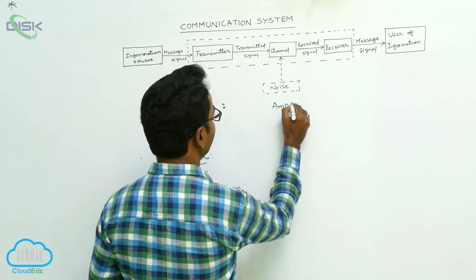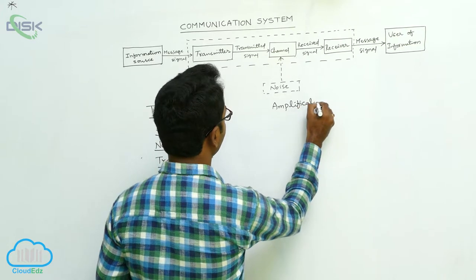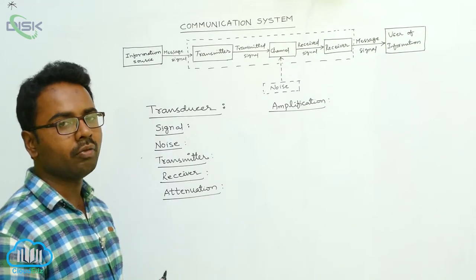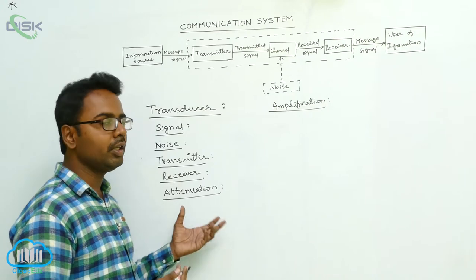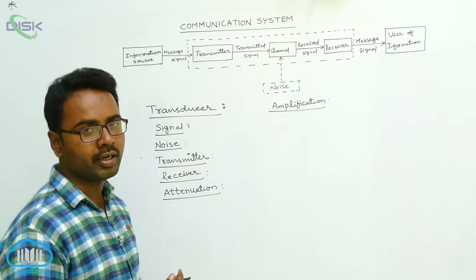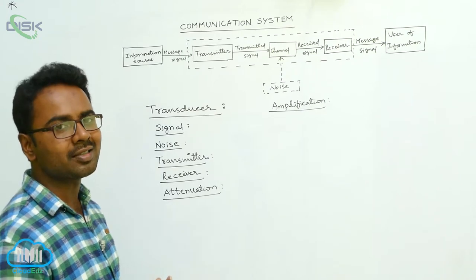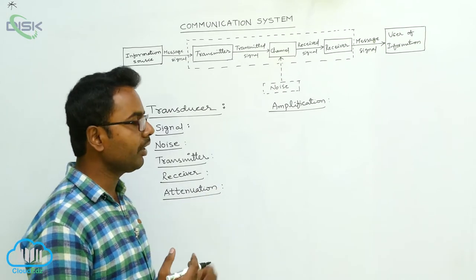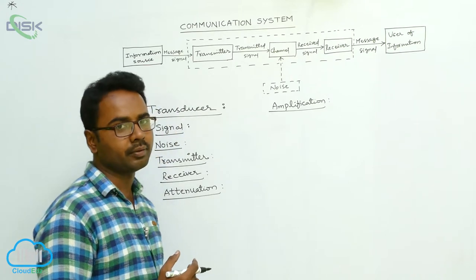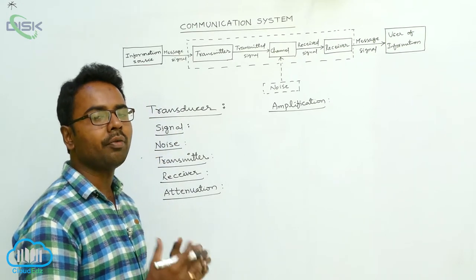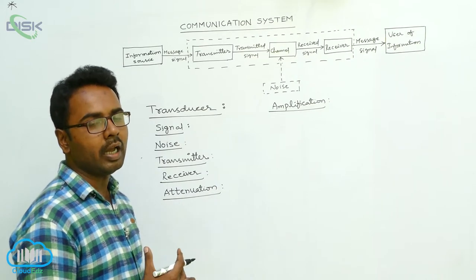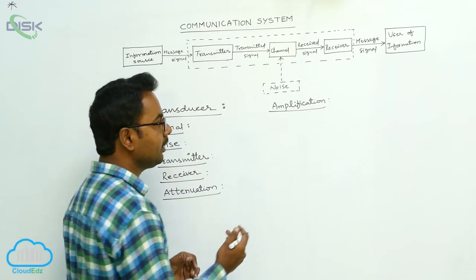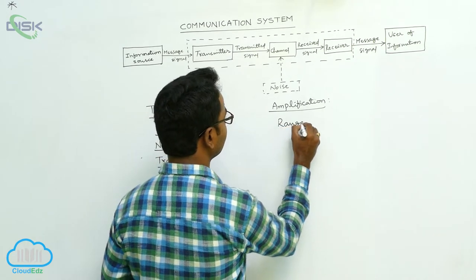Amplification is the process of increasing the strength of the signal. Whenever the information signal propagates through the channel, it gets attenuated and loses its strength. To increase the strength, we perform amplification using a device called an amplifier. The amplifier compensates for the attenuation and increases the signal strength — this process is called amplification.